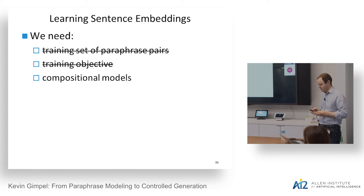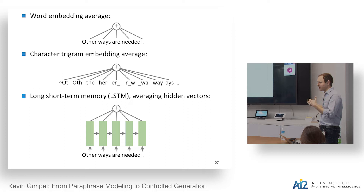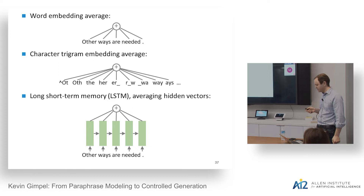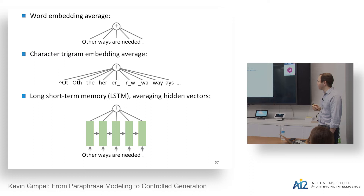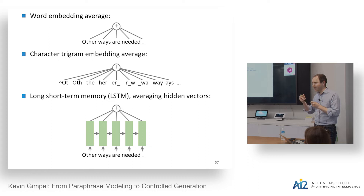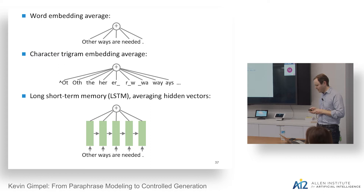We've done a lot of work comparing neural network architectures for the embedding function G. We found strong performance with the simple baseline of just averaging word vectors — the only parameters are word embeddings. We also found strong results using character trigrams and averaging their embeddings across the sentence. Keeping spaces in actually models some cross-word context; for example, a 't' at the end of one word followed by a space and then another word is often correlated with the word 'not.'